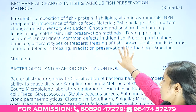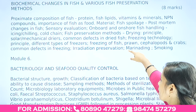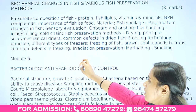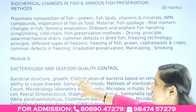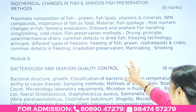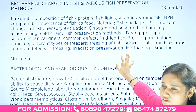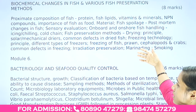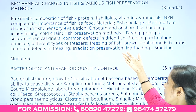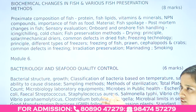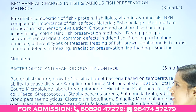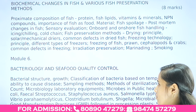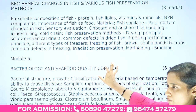Different fish preservation methods are covered: drying principles, various types of dryers — solar as well as mechanical — and common defects in dried fish. Freezing technology is also covered, including principles of different types of freezers, how to freeze different species such as fish, prawns, cephalopods, and crabs, along with common defects in freezing methods.